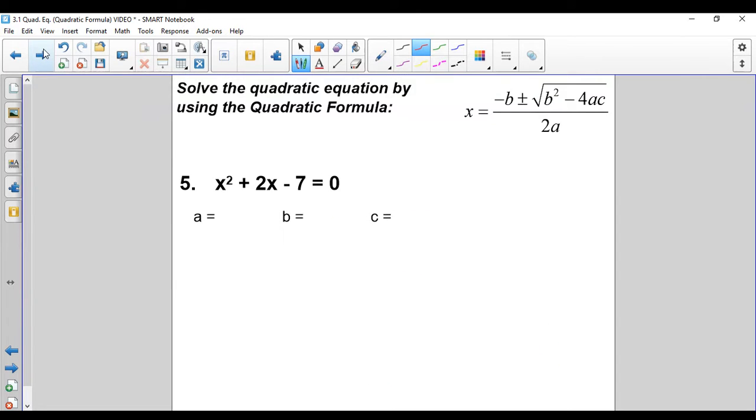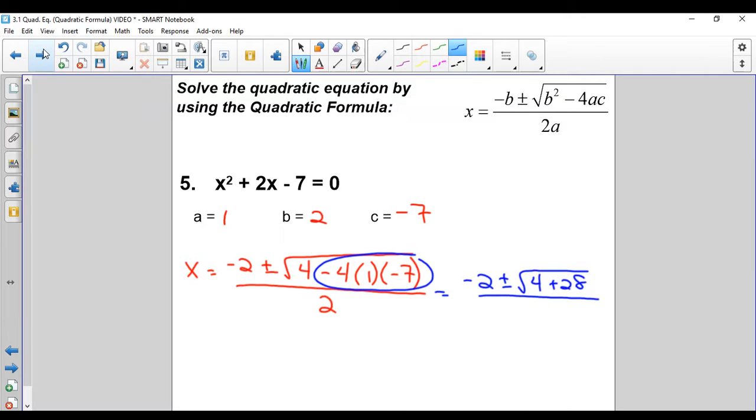Last one. Smaller numbers, we should be okay. a is 1, b is 2, c is negative 7. Plug it in. Negative 2 plus or minus b squared is 4 minus 4 times 1 times negative 7. We're back putting it all over 2. Do the minus 4ac portion. Negative 4 times 1 times negative 7 is a positive 28. So that means I'm going to add 4 to the 28 and put it over 2.